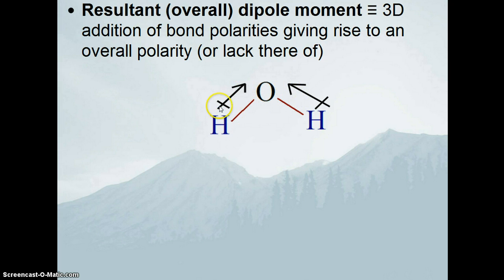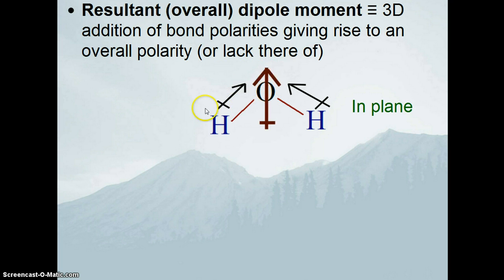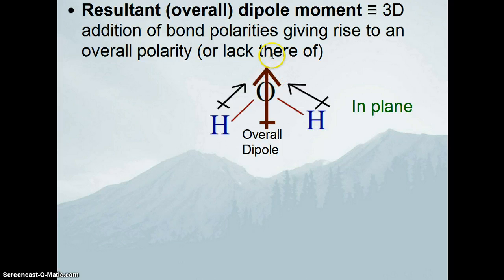If we take the vector additions, we have an influence on this side going up and to the right, and an influence on this side going up and to the left. The lateral components cancel out, but there is a net push in the upward direction. These two bond polarities are in the plane, so our overall dipole moment points straight up through the oxygen. Because of the orientation of water — the H-O-H angle — those bond dipoles don't cancel each other out; they add together to give a net push. For this course, I just want you to recognize whether or not there is an overall dipole moment.